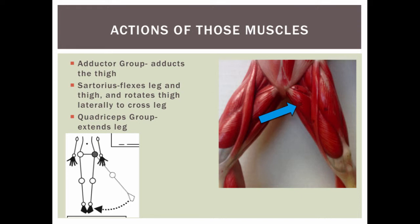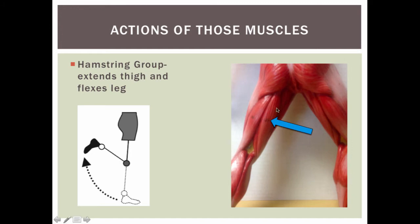Now let's talk about some actions of these muscles. The adductor group adducts the thigh — moves it towards the midline, as seen in this diagram. The sartorius helps to flex the leg and thigh and rotates the thigh laterally to cross the leg. The quadriceps group helps to extend the leg. On the posterior side, the hamstrings group helps to extend the thigh and flex the leg.